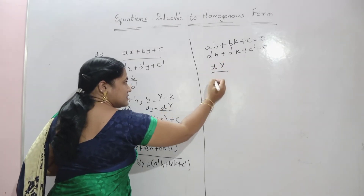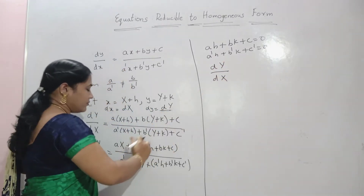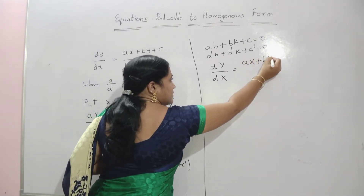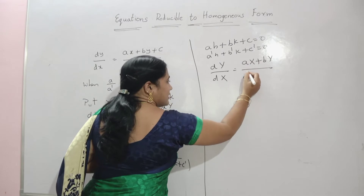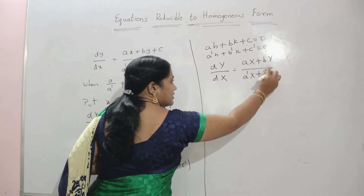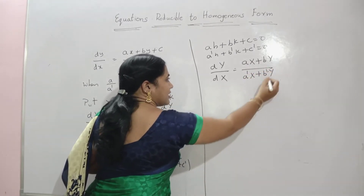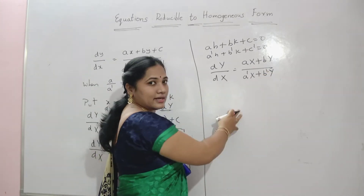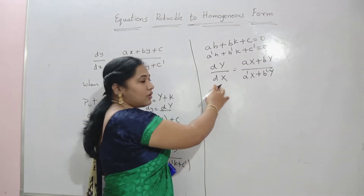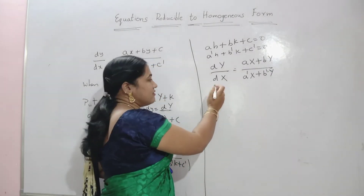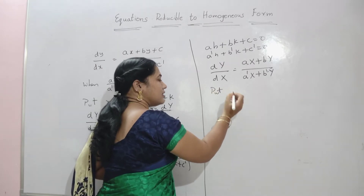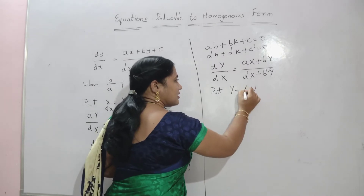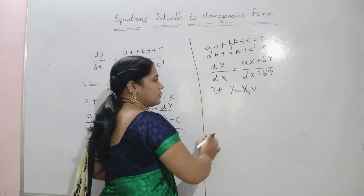The resulting equation is dY by dX equals aX plus bY divided by a-dash X plus b-dash Y. This is the homogeneous equation in capital X and capital Y. To solve the homogeneous equation, put Y equals capital X into v.